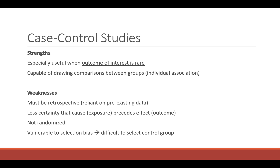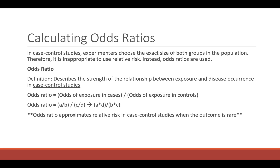Strengths of case control studies: they're really useful when an outcome of interest is rare, because patients already have the outcome, making it easy to identify them. They're capable of drawing comparisons between groups. Weaknesses: they must be retrospective, reliant on preexisting data, there's less certainty that cause precedes effect, they're not randomized, and vulnerable to selection bias — it can be difficult to select an appropriate matched control group. Because there is no follow-up period like in a cohort study, we can't calculate relative risk in a case control study.